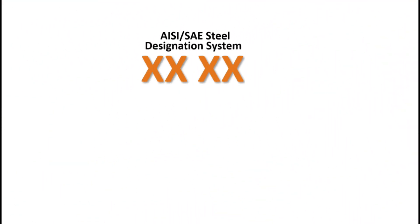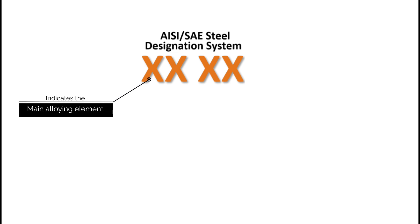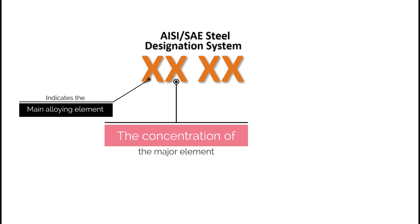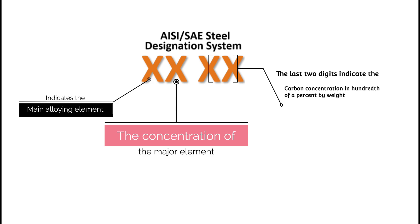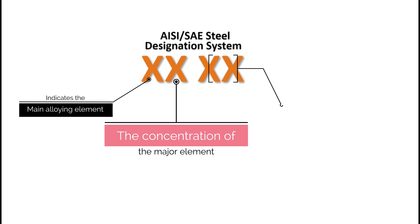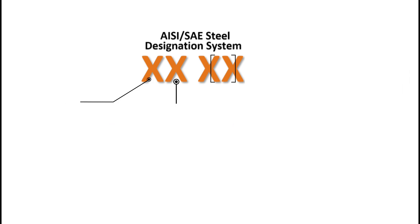The AISI and SAE numbering system uses a four-digit number for classification, whereby the first digit indicates the main alloying element, the second digit indicates the concentration of the major element in percentile, and the last two digits indicate the carbon concentration in hundredths of a percent by weight.